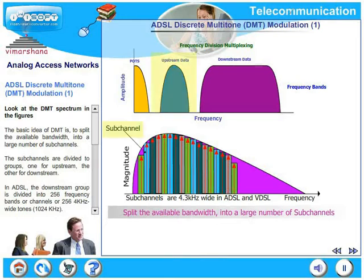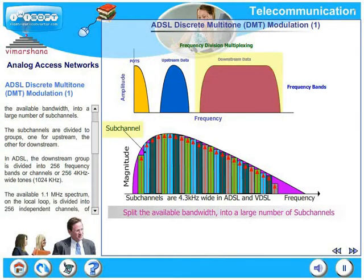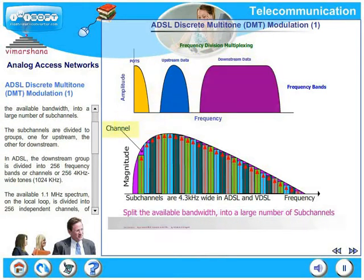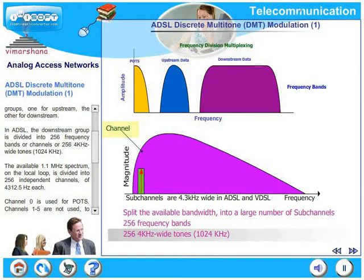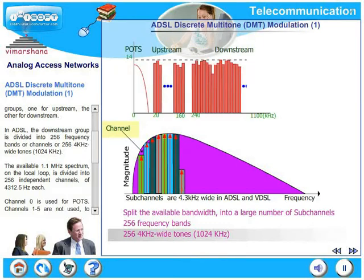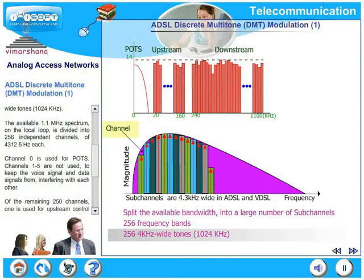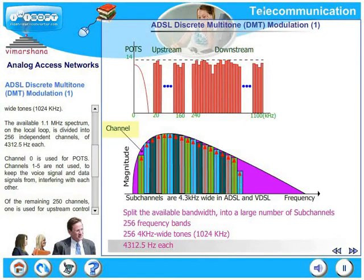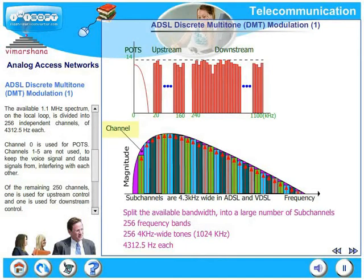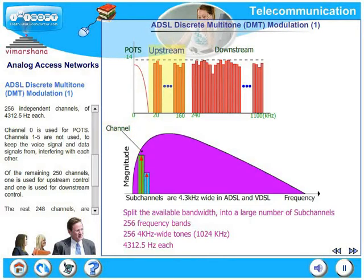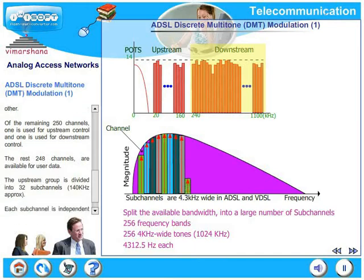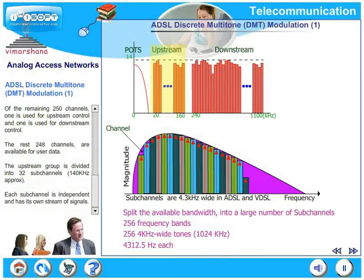The basic idea of DMT is to split the available bandwidth into a larger number of sub-channels. The sub-channels are divided into two groups, one for upstream and one for downstream. In ADSL, the downstream group is divided into 256 frequency bands or channels — 256 tones each 4 kilohertz wide, that is 1,024 kilohertz. The available 1.1 megahertz spectrum on the local loop is divided into 256 independent channels of 4,312.5 hertz each. The upstream group is divided into 32 sub-channels, approximately 140 kilohertz.